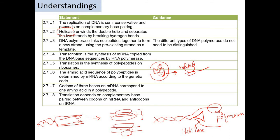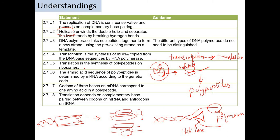Transcription is a copy made from the DNA, and the result of transcription is mRNA. After transcription, the mRNA comes out of the nucleus, attaches to a ribosome, and is used to make protein — this process is called translation. Translation results in a polypeptide, and the amino acid sequence is determined by the mRNA according to the genetic code.